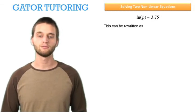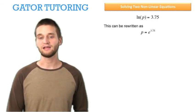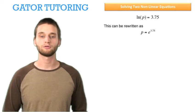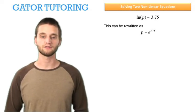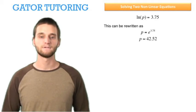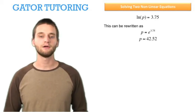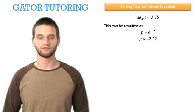To solve this for p, we can rewrite it as p equals e raised to the 3.75. This just comes from the definition of the natural logarithm. And if we evaluate that in a calculator, p is approximately 42.52.